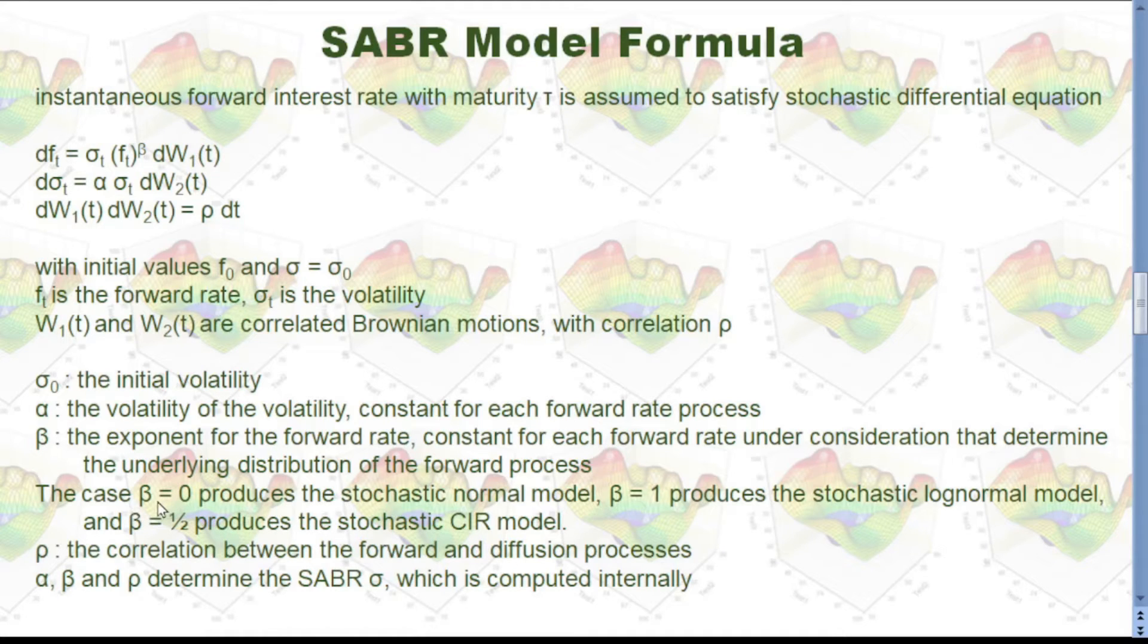If beta equals 0, it produces the stochastic normal model. If beta equals 1, it produces the stochastic lognormal model. And it also produces the stochastic CIR model.